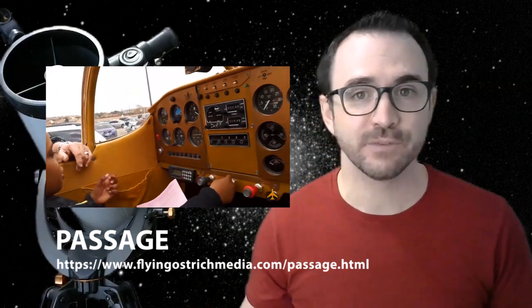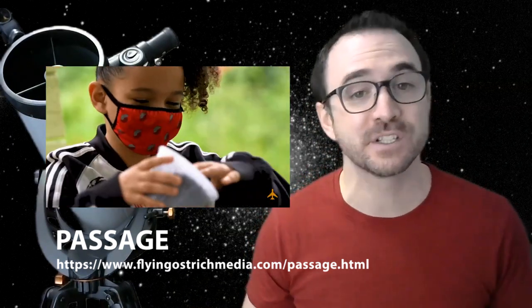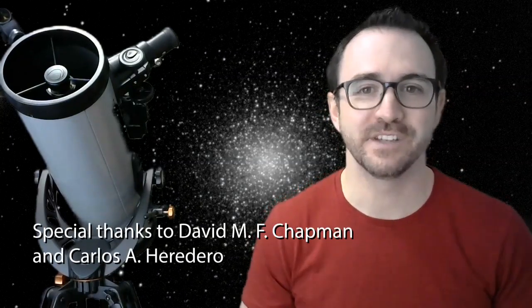However, I did create a southern hemisphere edition of 50 Things to See with a Telescope for an organization called Passage that plans to fly astronomy books and telescopes to remote villages in South America. We also had these books translated into Spanish. Although I have not personally been to the southern hemisphere, I have been far enough south to see the southern cross and a few southern sky targets. And I did have experts check my work for the southern hemisphere editions of the books.